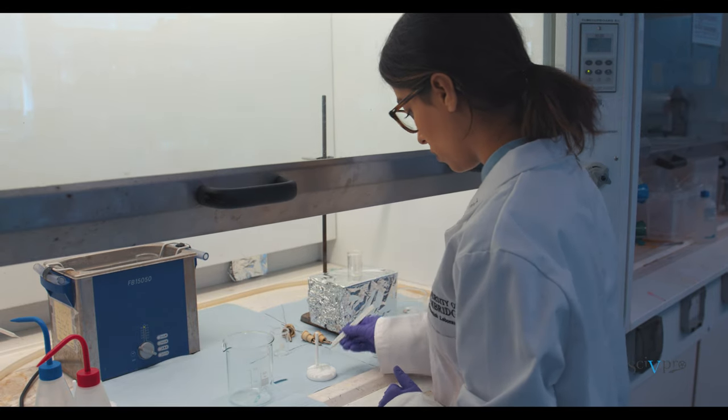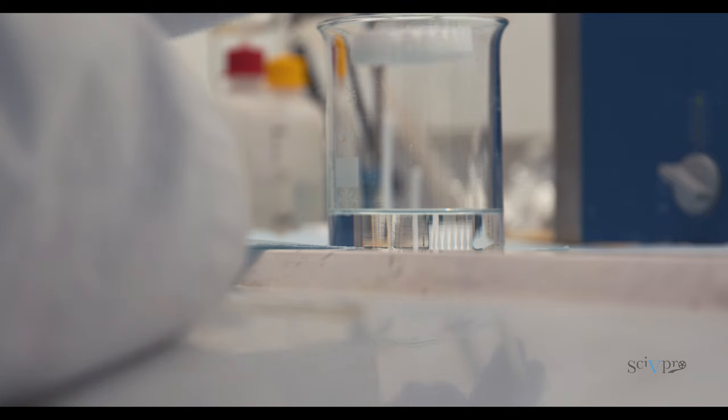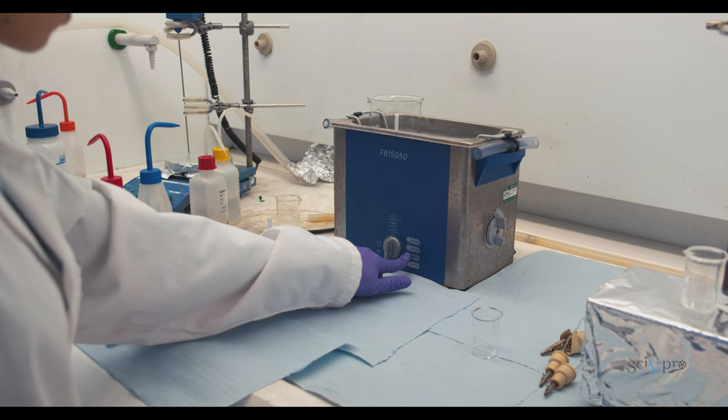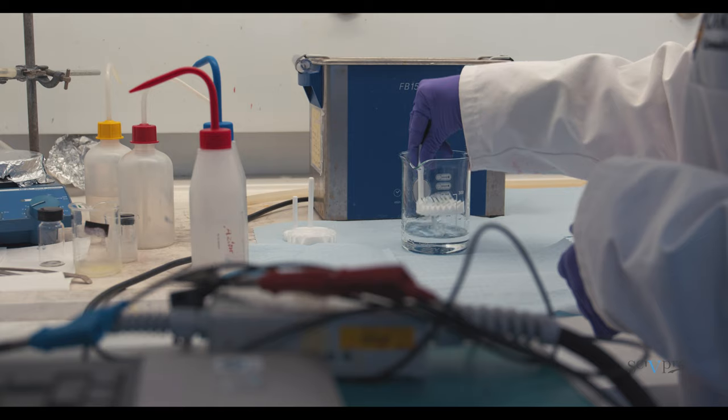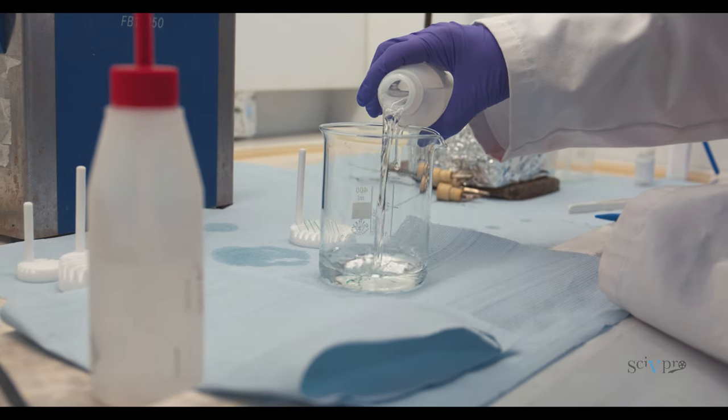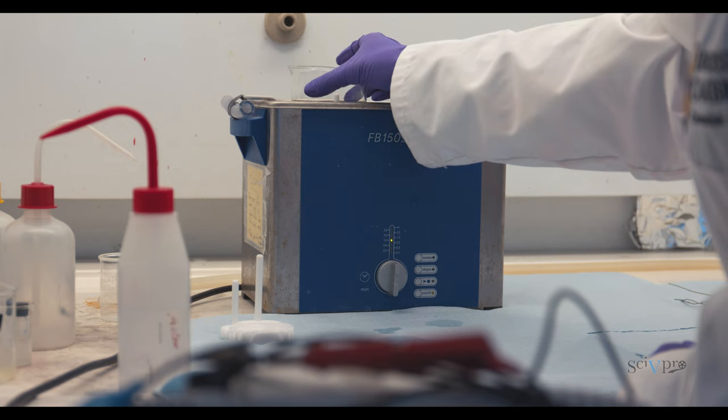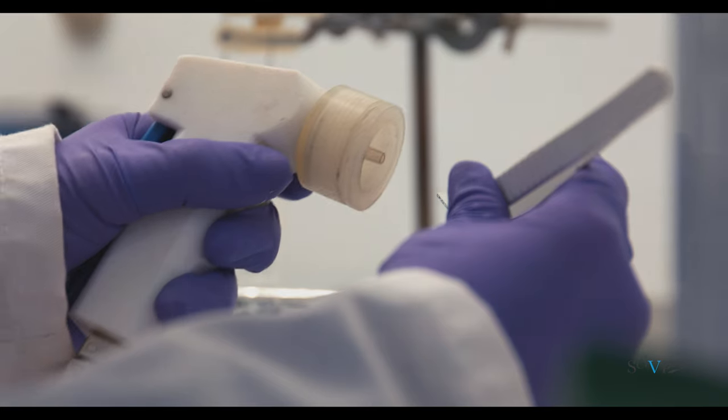The substrates need to be cleaned before use. Place the substrates on a substrate holder and immerse it in a beaker filled with acetone. Place the beaker in a sonicator filled with water and sonicate for 10 minutes. Transfer the substrate holder to another beaker containing isopropanol and sonicate again for 10 minutes. Finally, dry the substrates with nitrogen stream.